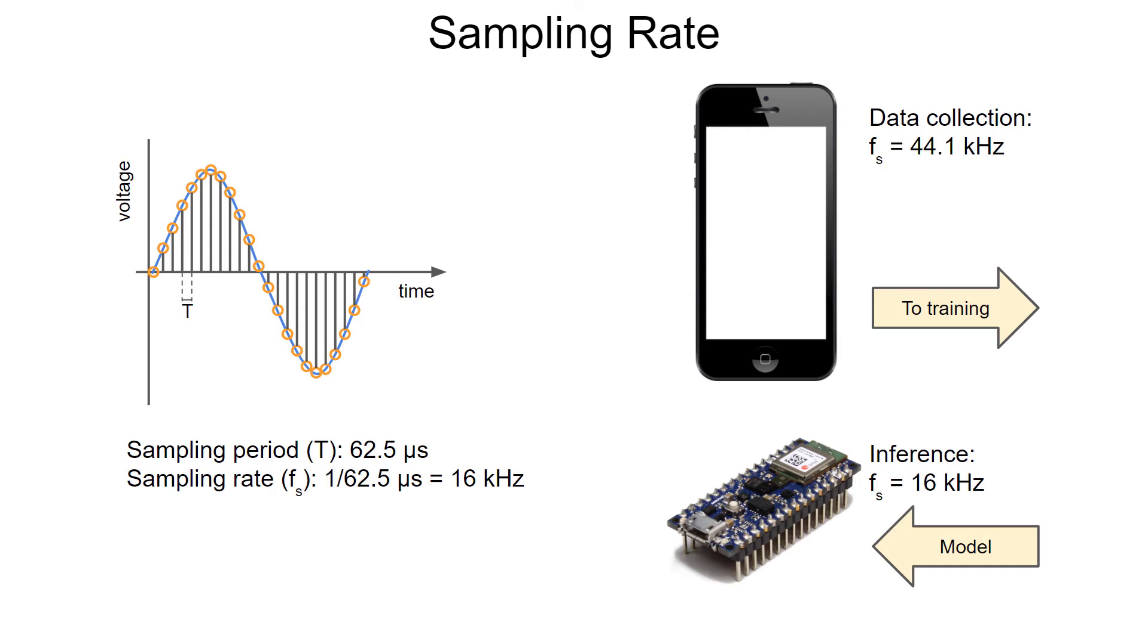You would need to downsample your training, validation, and test sets to 16 kilohertz prior to feature extraction so that it lined up with our target inference device. Don't worry, Edge Impulse will take care of downsampling audio files for us to the appropriate 16 kilohertz.